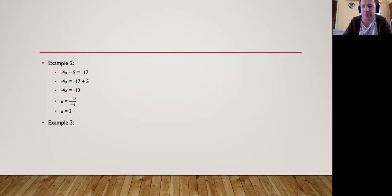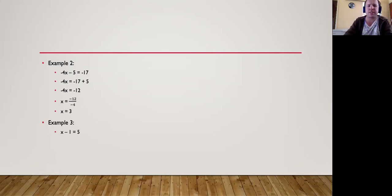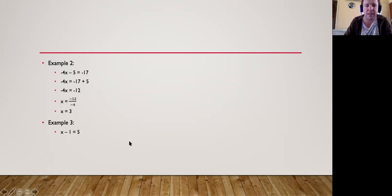Example 3: a very basic one — x minus 1 is equal to 5. Simply move the minus 1 over to the other side; it becomes plus 1. So x equals 5 plus 1, which is 6.